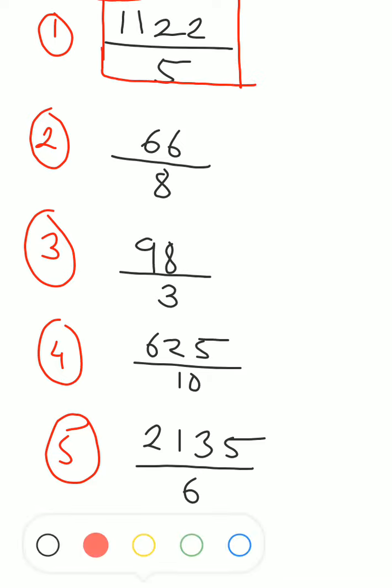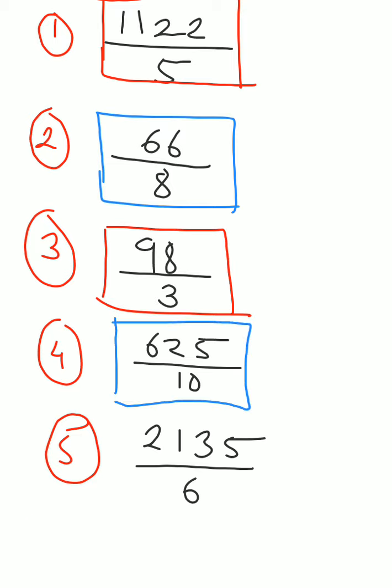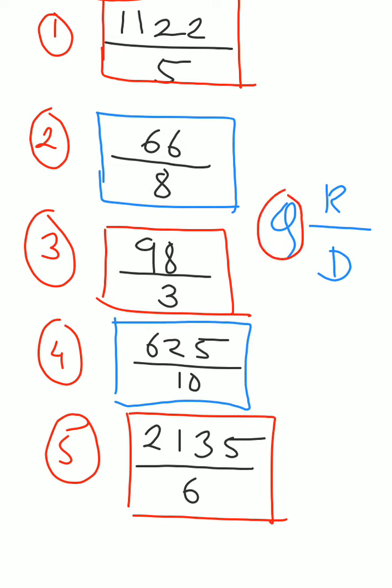So these are your new questions: 1,122 upon 5, 66 upon 8, 98 upon 3, 625 upon 10, and the last one is 2,135 upon 6. Solve this by the same method. Remember the method: Q R D. Solve it, sirf divide karo. Where Q is written, put the quotient of division. Remainder, put it here. And D, denominator will always be as it is. And over. You'll get the mixed fraction.